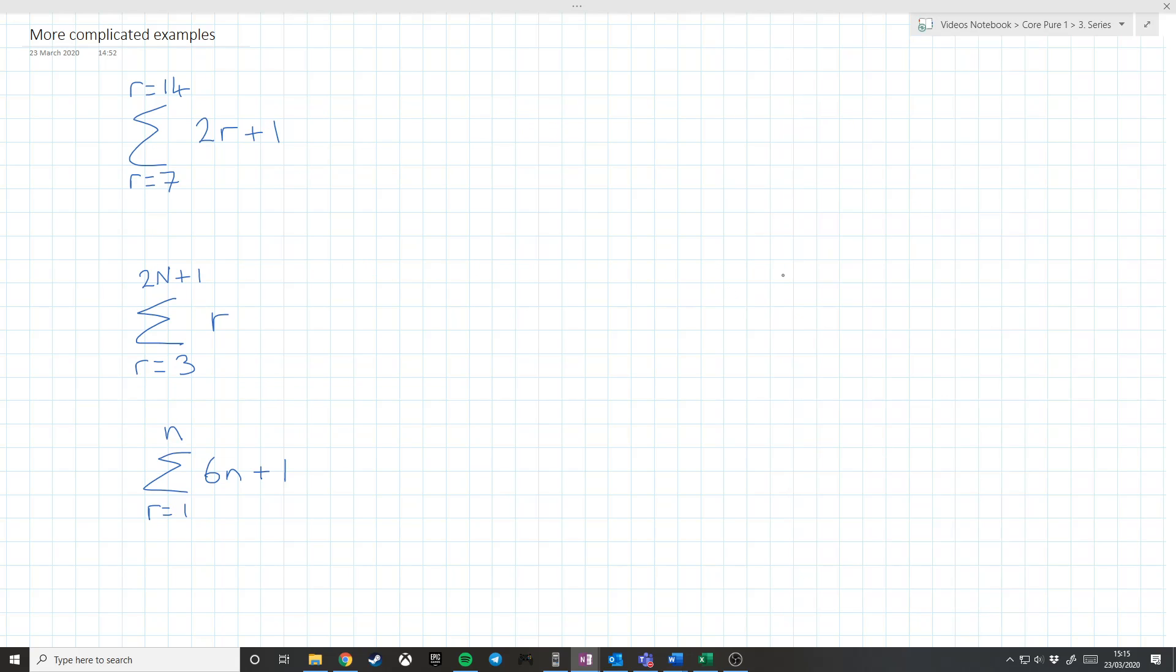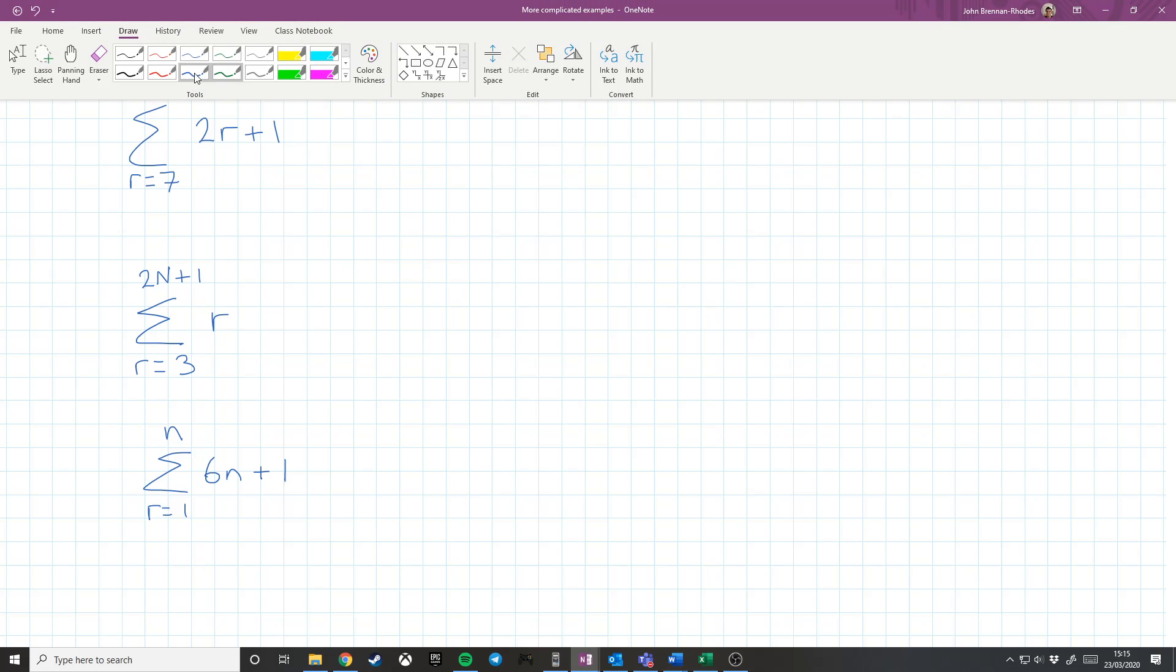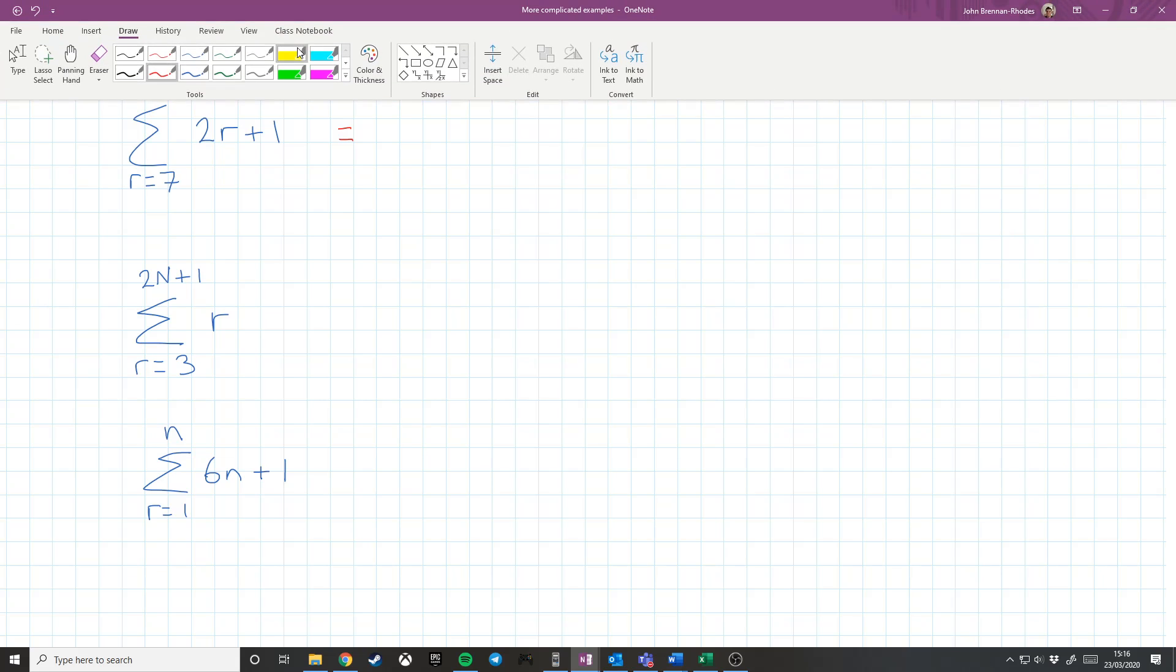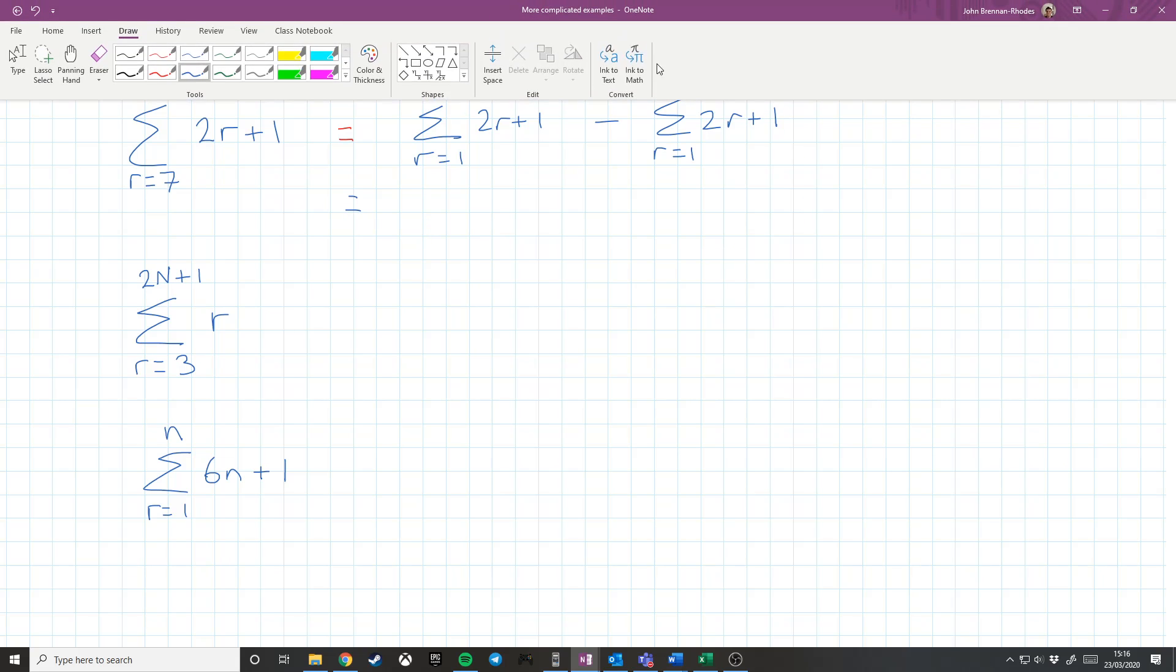Okay. Slightly more complicated examples. If I have r equals 7 to 14 of 2r plus 1, I can do this by saying, if I imagine I had 1, 2, 3, 4, 5, 6, 7, 8, 9, 10, 11, 12, 13, 14, I want these ones, I want from 7 to 14. So I can do this by saying, I actually want to do the sum from r equals 1 to 14 of 2r plus 1, and I want to subtract from that the sum from r equals 1 to 6. Super careful there with the 6 of 2r plus 1.